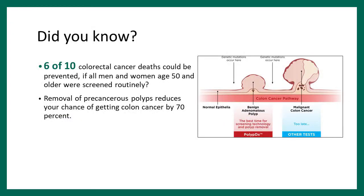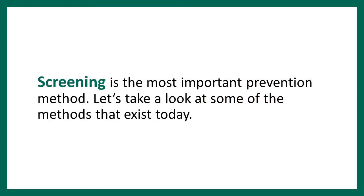Prevention: six out of ten colorectal deaths could be prevented with routine screening. That's 60% of 135,000 patients — about 70,000 cases that could have been prevented with screening. Removal of precancerous polyps reduces the chance of getting colon cancer by 70%. Screening is the most important prevention, and there are several methods.